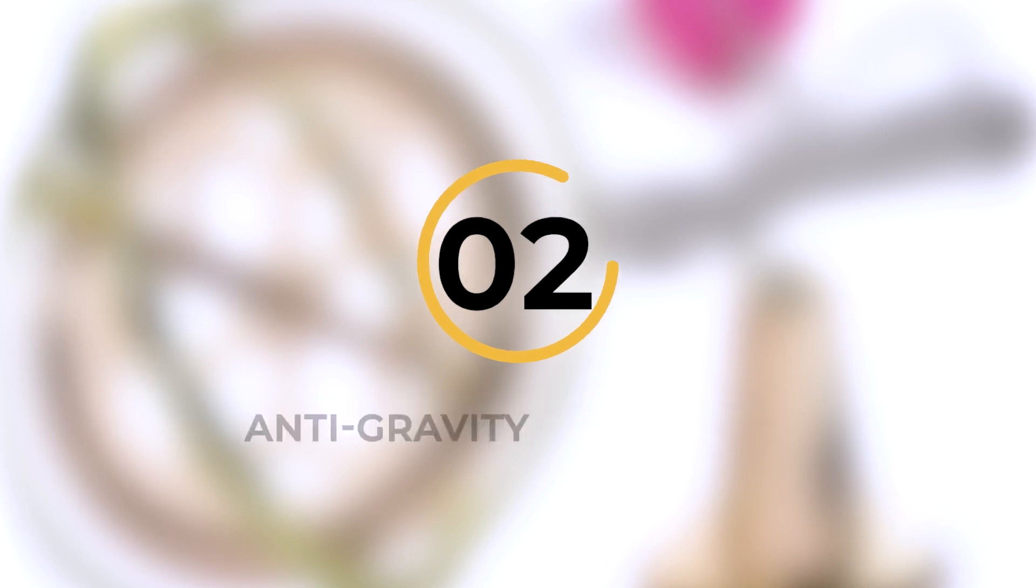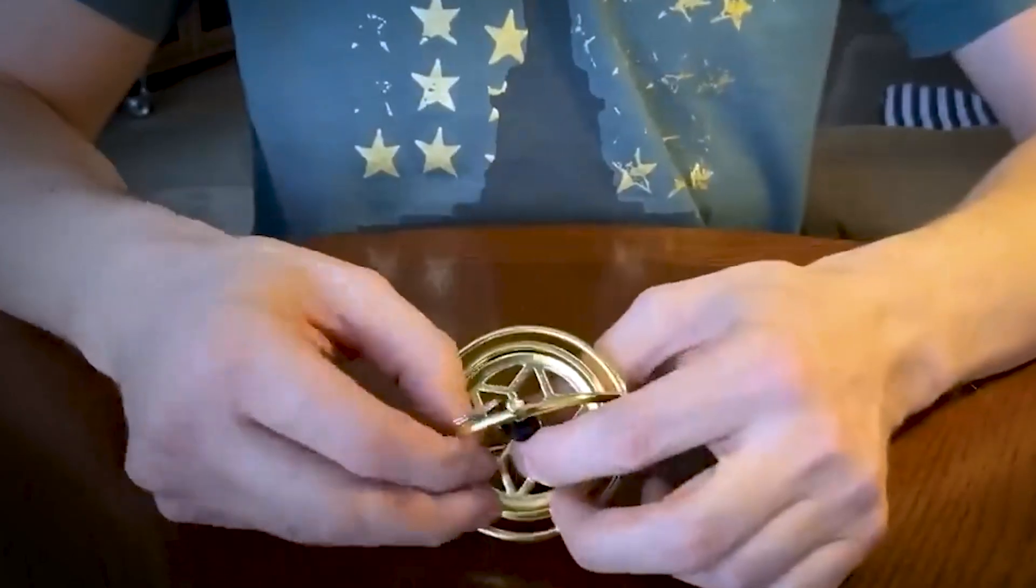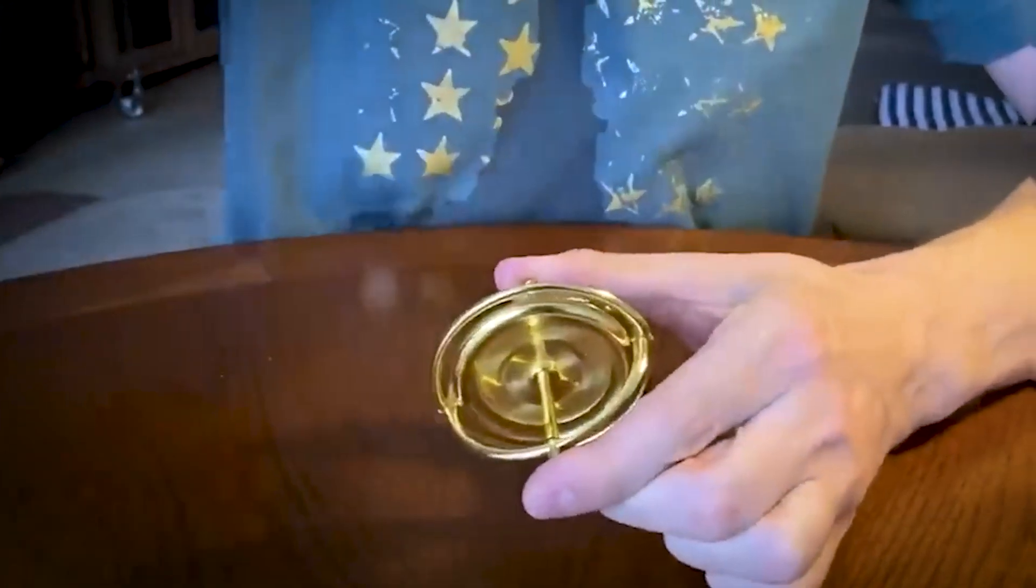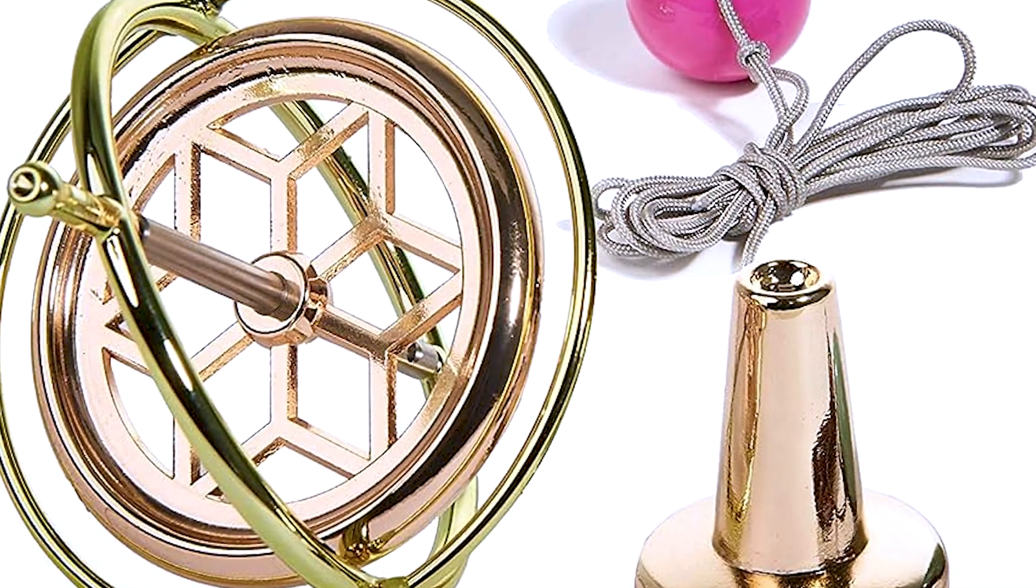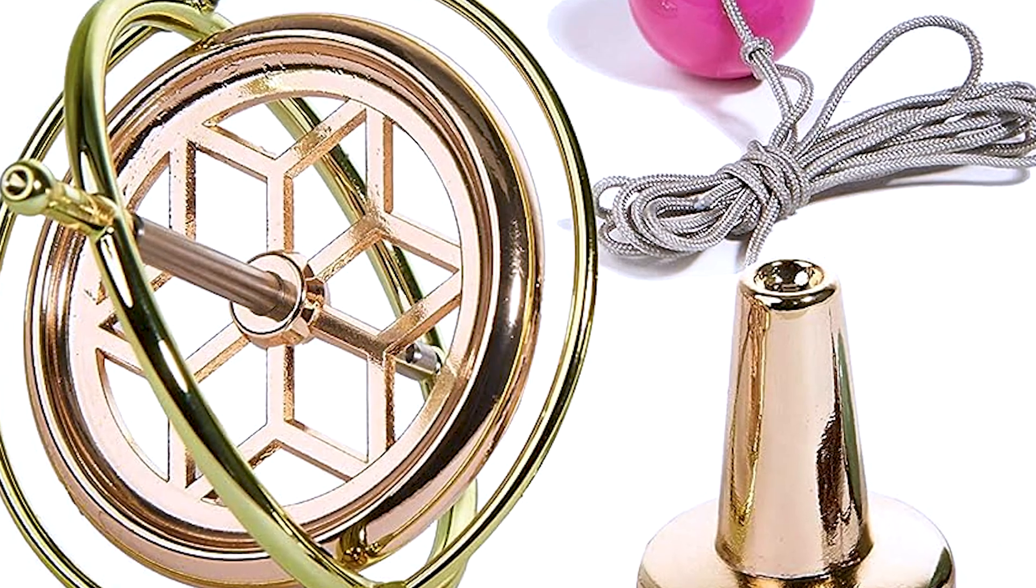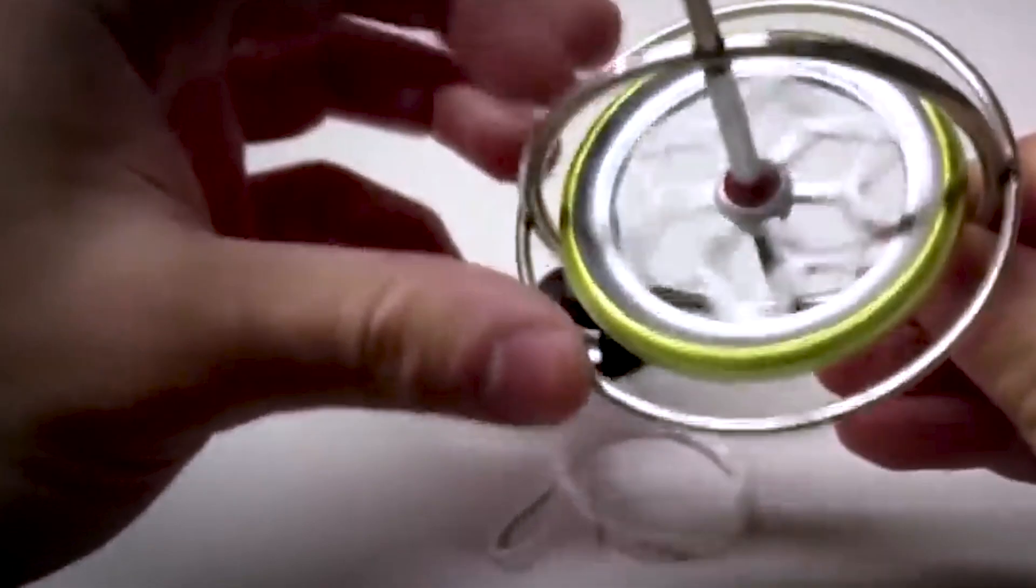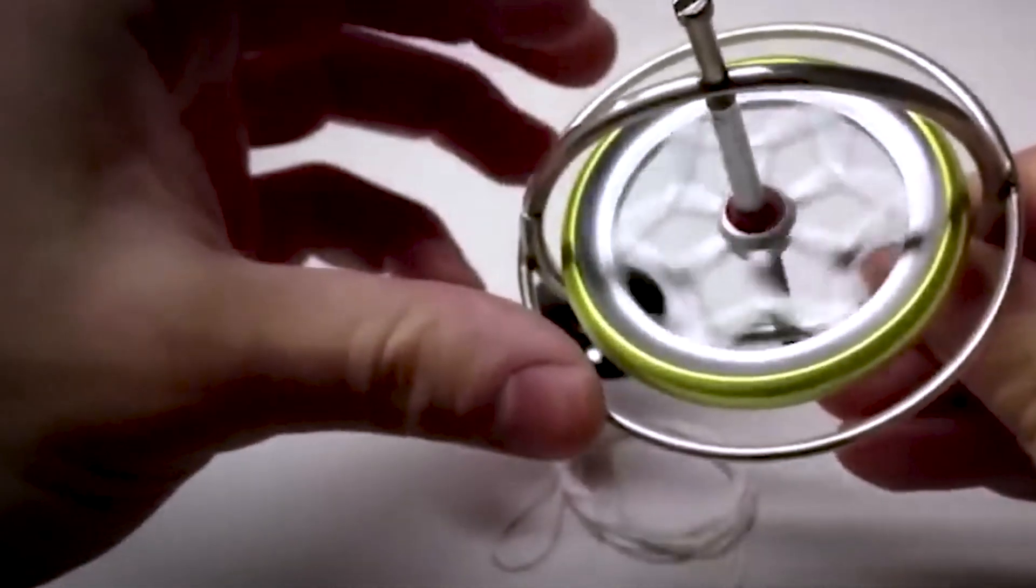Number 2. Anti-Gravity Gyroscope. What could be more delightful than a decorative piece that also doubles as a playful gadget? The Anti-Gravity Gyroscope is made of durable zinc alloy, ensuring it won't rust and can be enjoyed for years to come. With its charming steampunk-inspired design, this gyroscope is not just for display, it's meant to be played with.